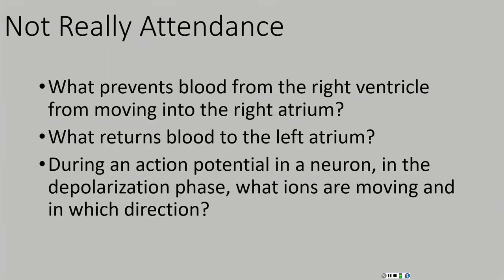Let's go ahead and get rolling with our attendance questions. What prevents blood from the right ventricle from moving into the right atrium? What returns blood to the left atrium? And during an action potential in a neuron in the depolarization phase, what ions are moving and in which direction? Go ahead and try to answer these — pause your video if you need to and see if you can come up with the answers before I tell you what they are.